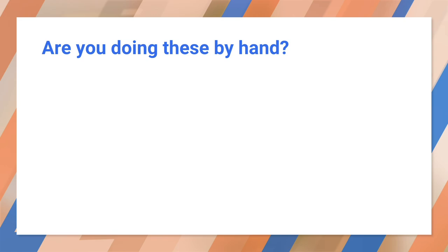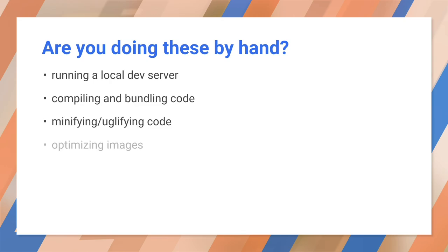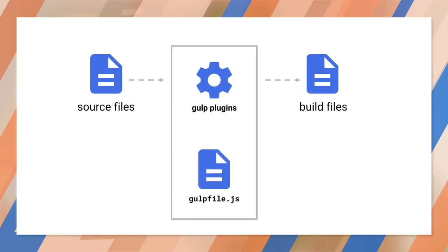Modern web development involves quite a few tasks: running servers, optimizing images, and processing source code. These are the kinds of manual tasks that you can automate with Gulp, Grunt, Make, or other build tools. The world of build tools is constantly changing, but we chose Gulp here for its relative longevity and its relative simplicity.